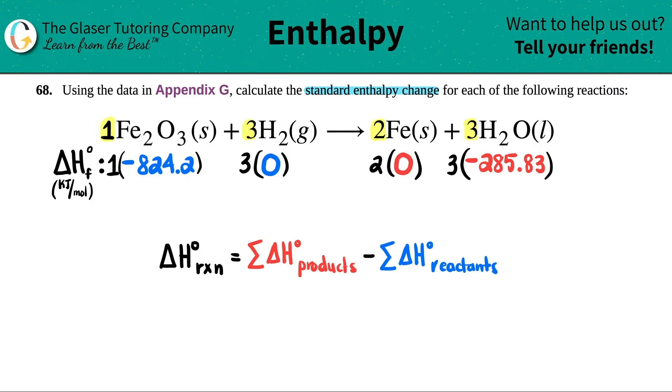Once you do that, you just add the two blues together. You add all of the reactants together, and you add the products together to get one big number. So let's see. What's the sum of the reactant side? It would just be the negative 824.2. And now what's the sum of the product side? It would be three times negative 285.83, so it would be negative 857.49.